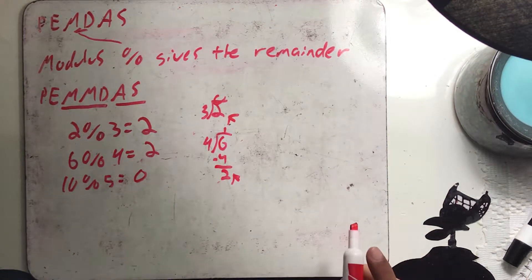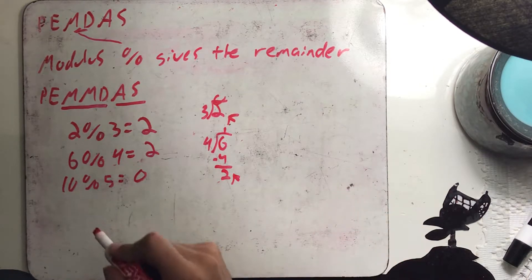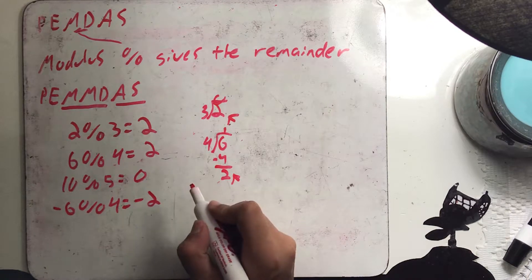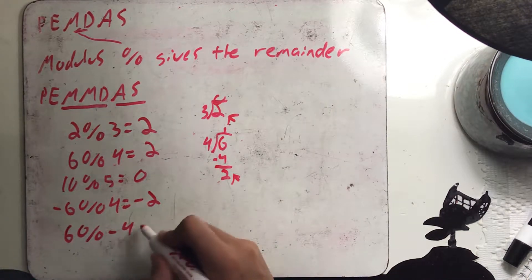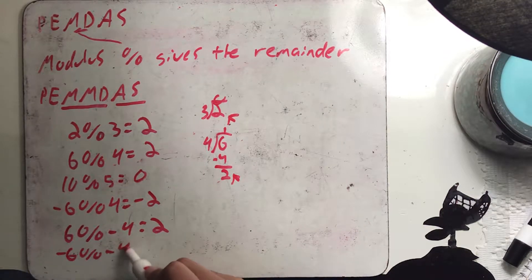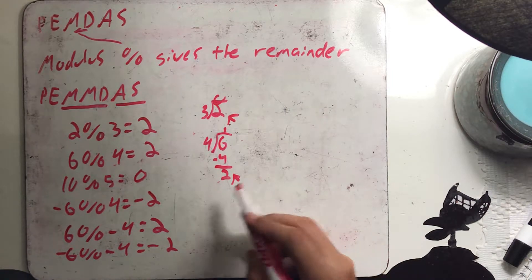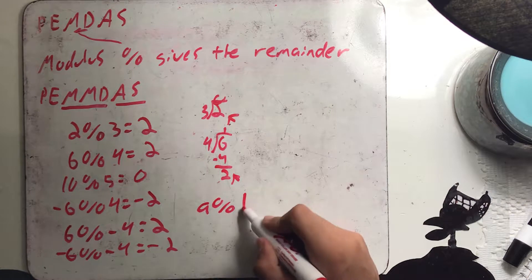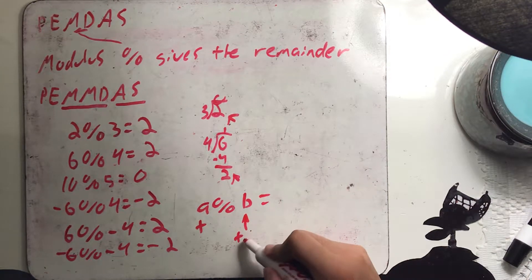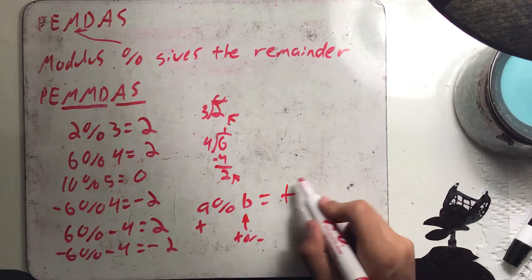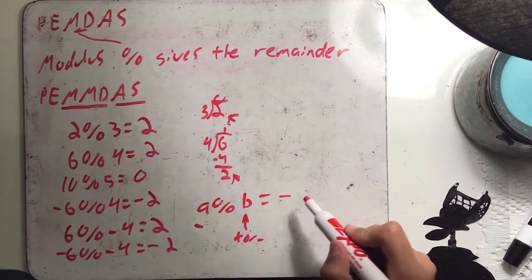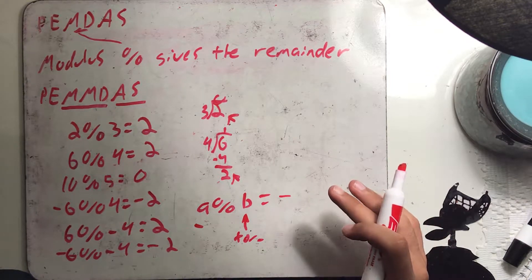What if you have a negative number in the modulus? For example, negative 6 mod 4 equals negative 2. And 6 mod negative 4 equals positive 2, not negative 2. Negative 6 mod negative 4 equals negative 2. Basically, in a mod b, the sign of the result follows the sign of a, regardless of what b is.